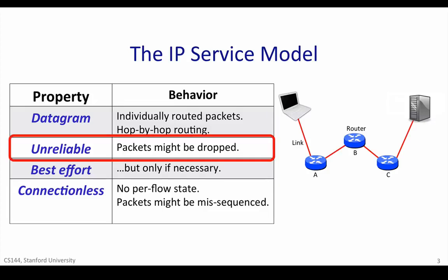The second aspect of the IP service model, and perhaps most surprisingly, is that IP is unreliable. IP makes no promise that packets will be delivered to the destination. They could be delivered late, out of sequence, or never delivered at all. It's possible that a packet will be duplicated along the way, for example by a misbehaving router. The key thing to remember is that IP is unreliable and makes no guarantees.